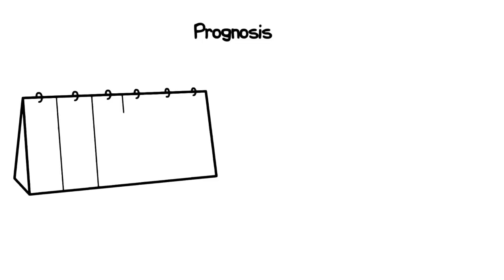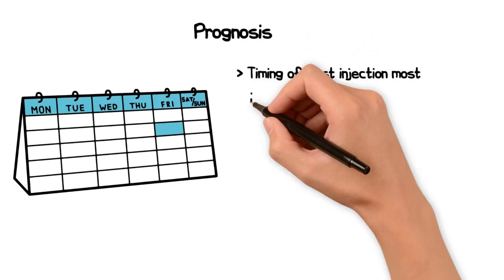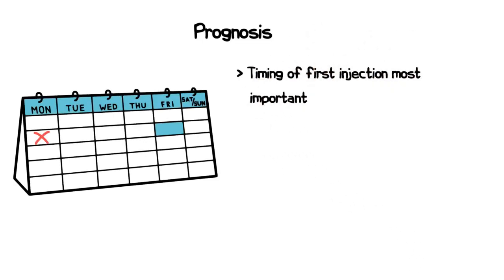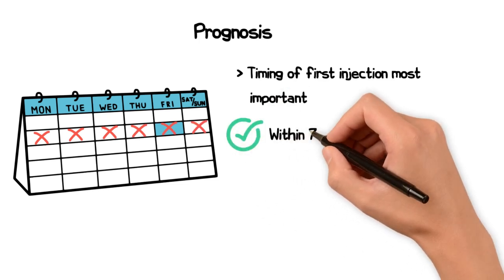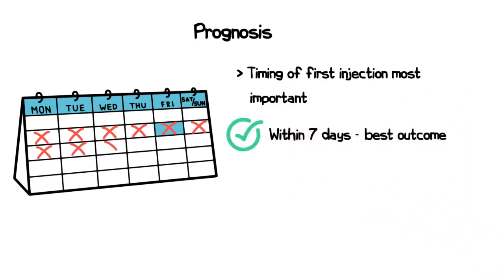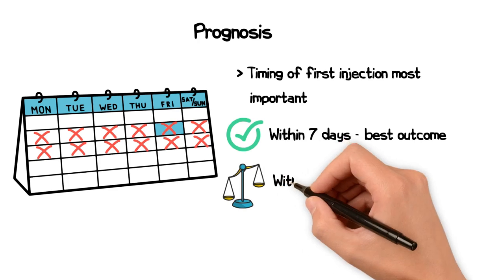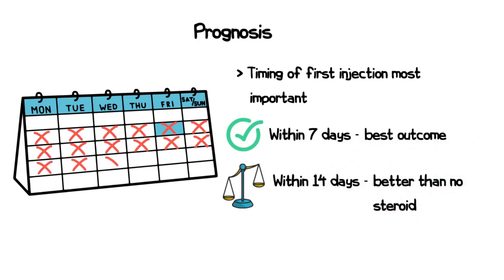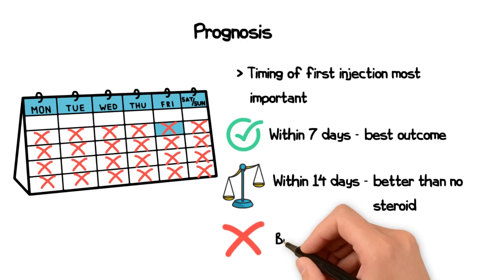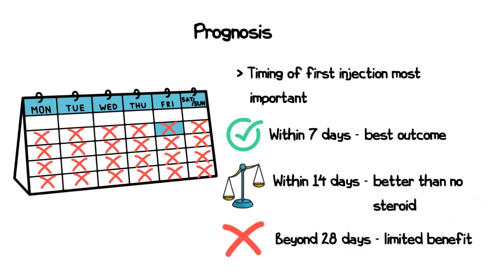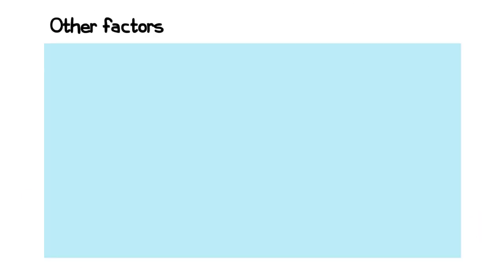The timing of the first steroid administration is the most significant prognostic factor, with patients treated within 7 days having the best outcomes. As time progresses, steroid administration within 14 days still offers benefits compared to no steroids, but beyond 28 days there is limited benefit from steroid use.